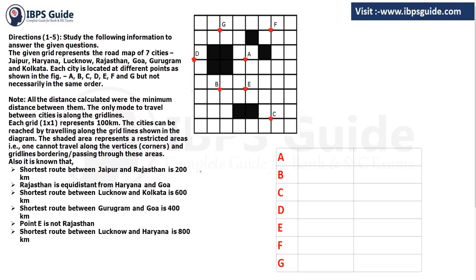The cities can be reached by traveling along the grid lines shown in the diagram. The shaded area represents a restricted area — one cannot travel along the vertical corners and grid lines bordering or passing through those areas. So if there is a shaded region between A and F, you can't go through those points. You must go around the shaded area using the longer available route. You can't move along the shaded areas at all.